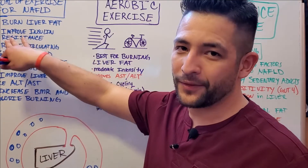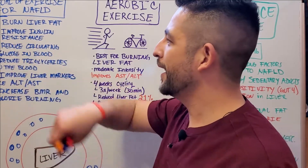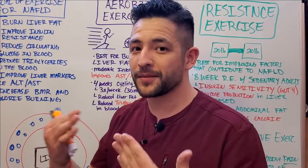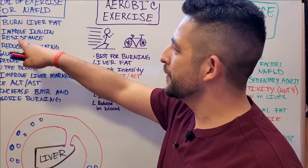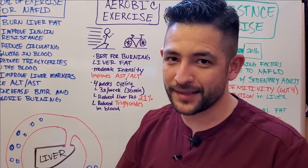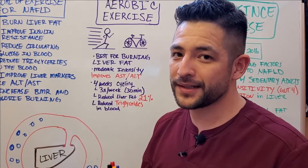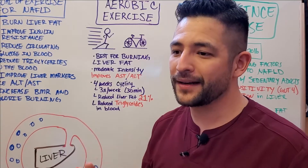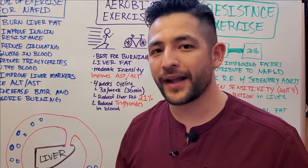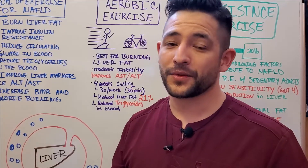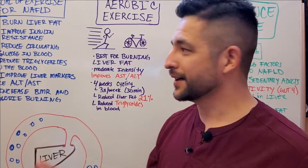The first and number one goal is to burn liver fat. We want to be able to burn that liver fat, and the exercise strategy should support that. The next thing is we want to improve insulin resistance, which is really important because insulin resistance is one of the main factors that contribute to the development of a fatty liver, as well as metabolic syndrome, type 2 diabetes, obesity, etc.